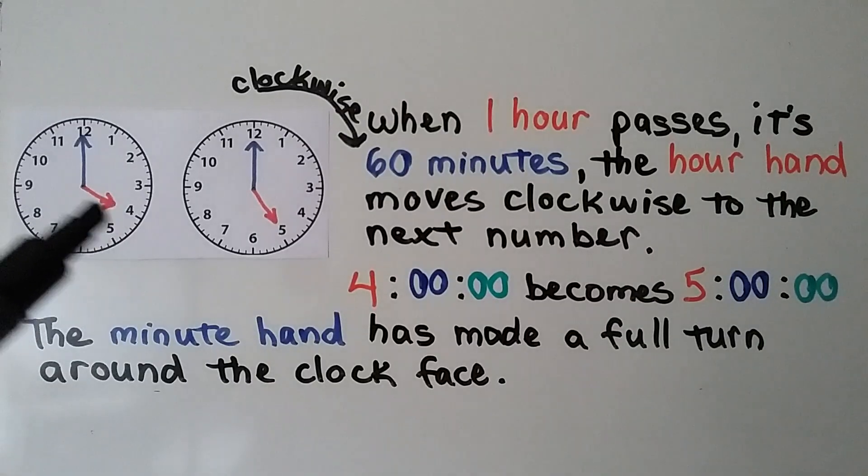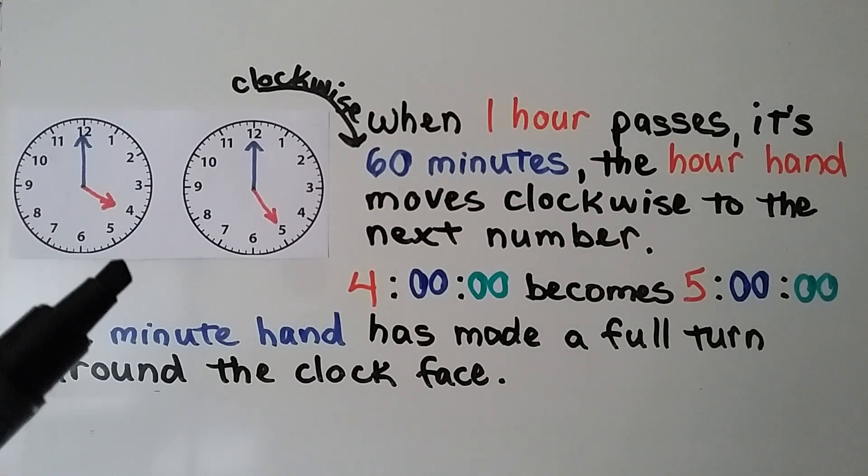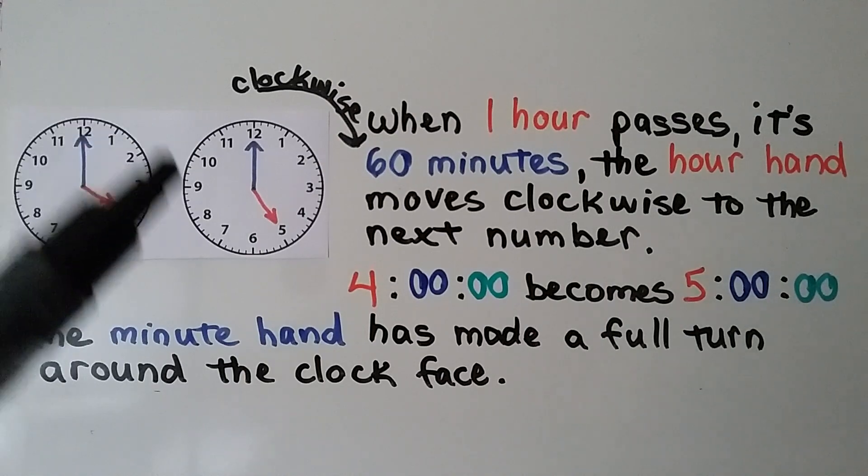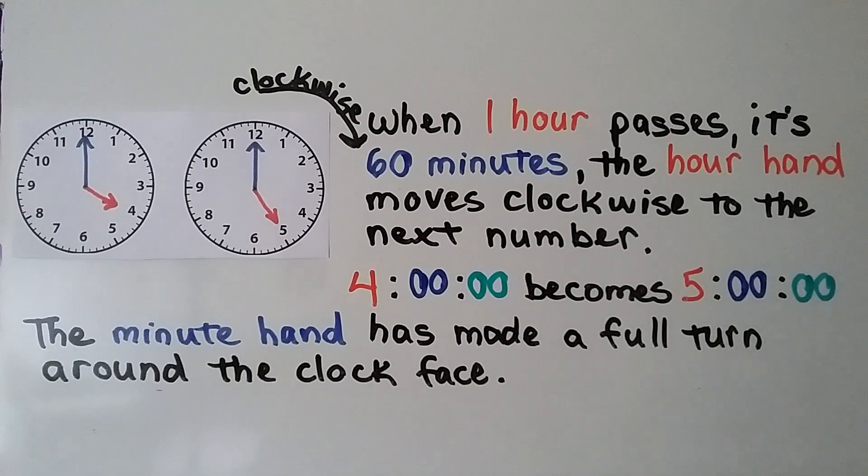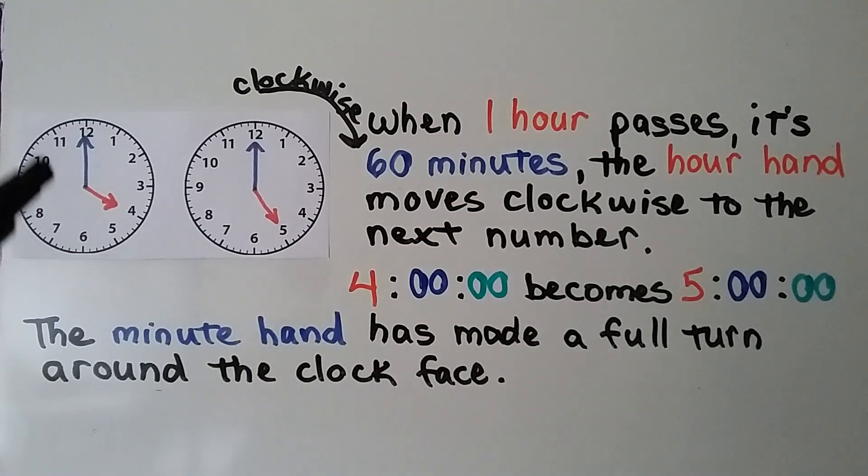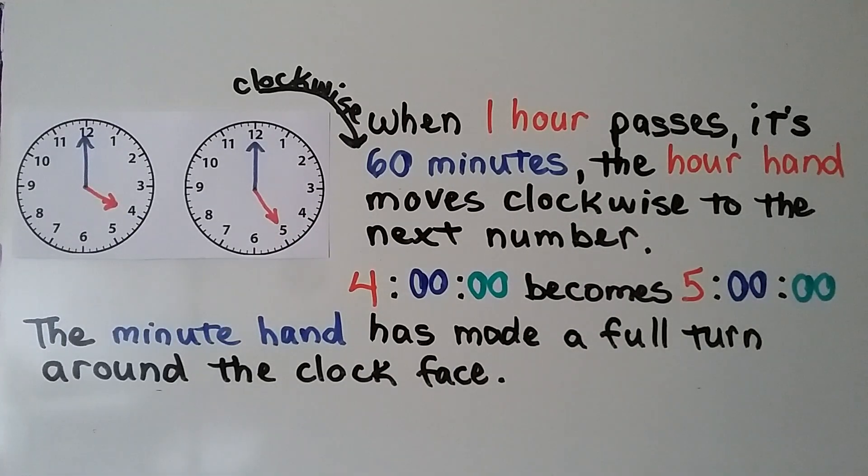This clock is pointing to 4 o'clock. When one hour passes, it's 60 minutes. The hour hand moves clockwise to the next number. 4 o'clock becomes 5 o'clock. The minute hand has made one full turn around the clock face and the hour hand moved to the next number.